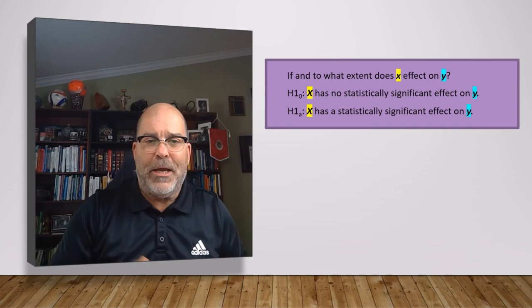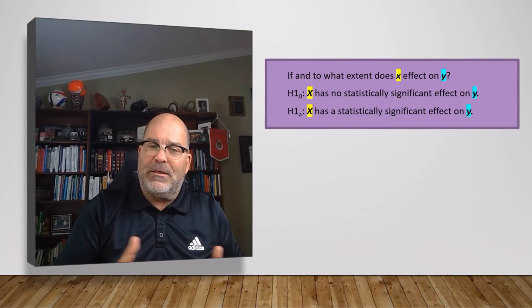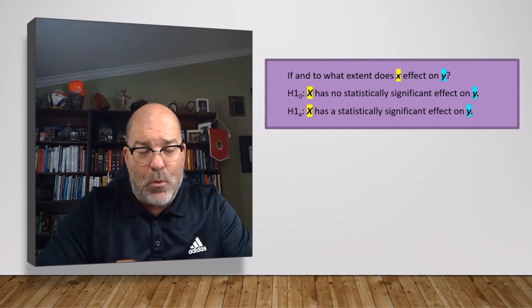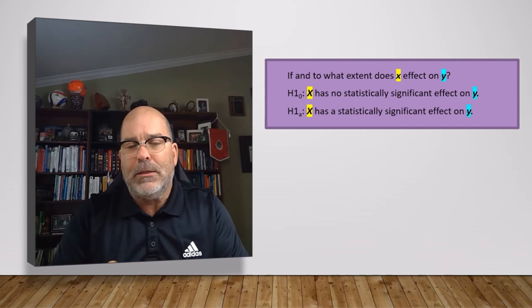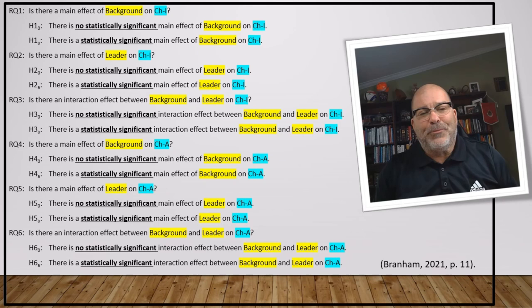So how does that translate into our formulaic approach? We follow the pattern: if and to what extent does X affect Y? The null hypothesis is: X has no statistically significant effect on Y. The alternative is: X has a statistically significant effect on Y. This is an example — it doesn't fit universally — but it aligns nicely with what we laid out in the problem and purpose. There are other appropriate ways to do this; I'm just providing the formula so it's easy for you to apply.